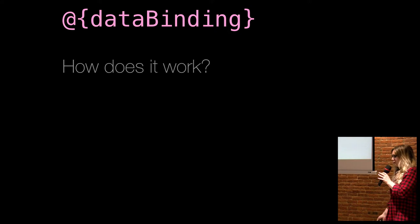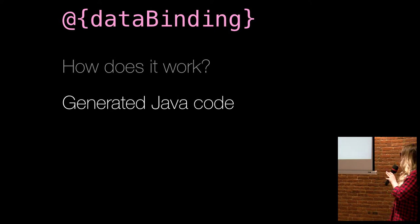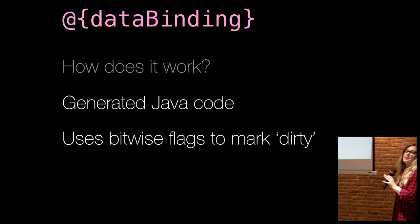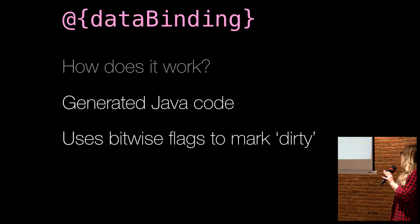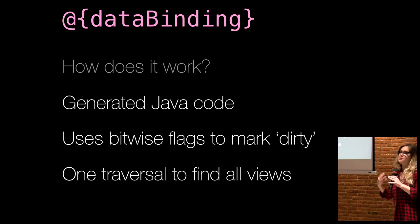Enter data binding. And you would think something that promises to fix these is probably using something dirty like reflection. Well, it's not. It's generating Java code, generated at compile time, and it uses bitwise flags to mark which views are dirty and need to be updated. And it takes one traversal, maps out all of the views, so you don't have to go through again and again doing findViewById. So it's very efficient.